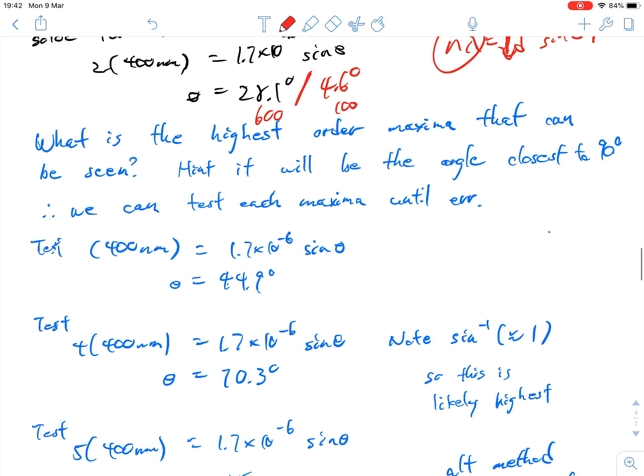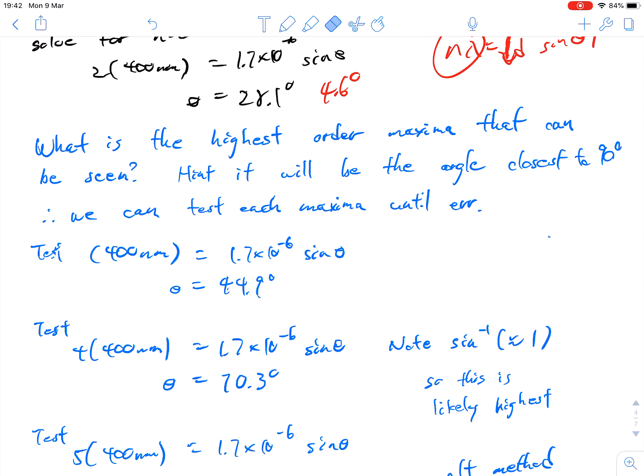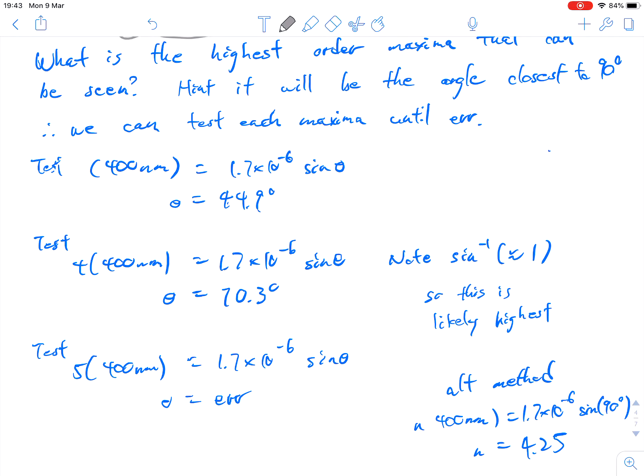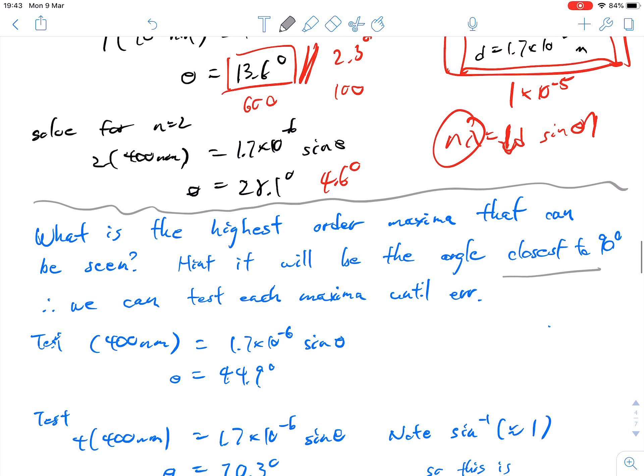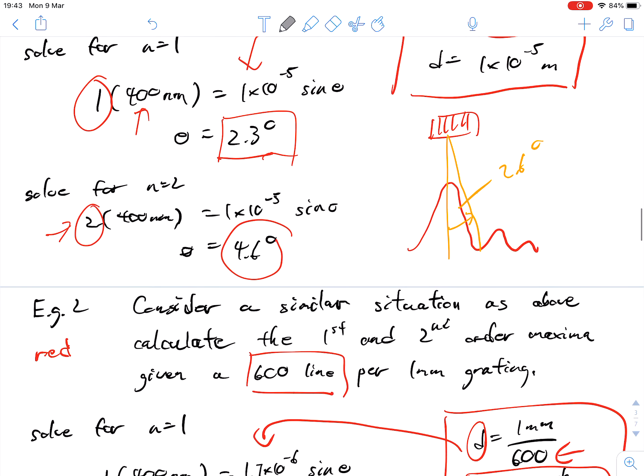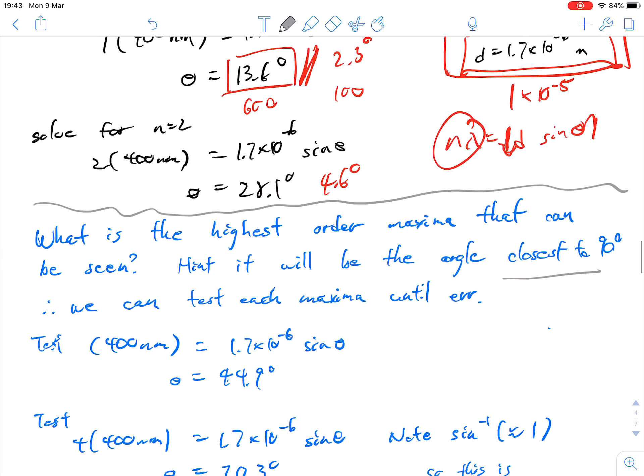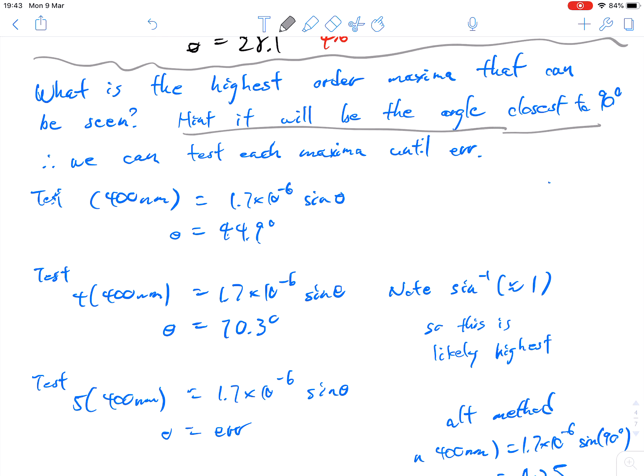Our next question here is: what is the highest order maxima that can be seen? The hint here is that the angle can only go so far. If you think about this example, the angle gets bigger and bigger the further we go out, and then it's going to reach a maximum. It can't bend around that corner. So really, our maximum angle is 90 degrees, our right angle. That is actually our hint when you think about the physics of what's going on there. I'm going to show you two different ways of doing this.